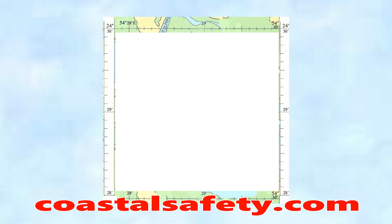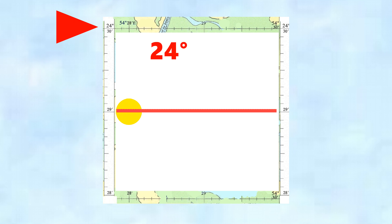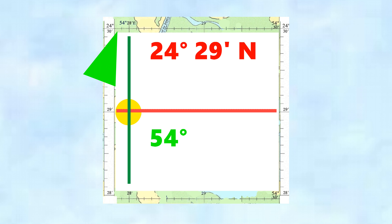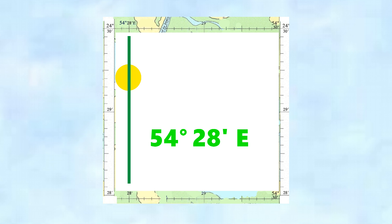Here we have a blank chartlet with latitude and longitude on the scale. Let's place a golden disc on there. What is the latitude? The full degrees is 24 degrees, the full minutes is 29 minutes — so the latitude is 24 degrees 29 minutes. Now for the longitude: here's 54 degrees and here's 28 minutes. So that position is at those coordinates. Simple as that.